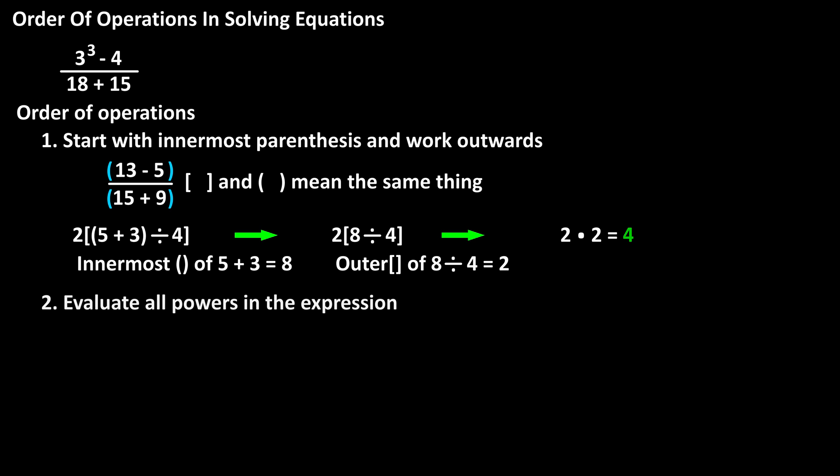Rule number 2 is to next evaluate all powers in the expression, meaning any terms with an exponent or raised to a power. As an example, 3 raised to the 3 times 2 raised to the 2, we first perform the exponent operations. 3 raised to the 3 equals 27, and 2 squared equals 4, which gives us 27 times 4, and that calculates to 108.